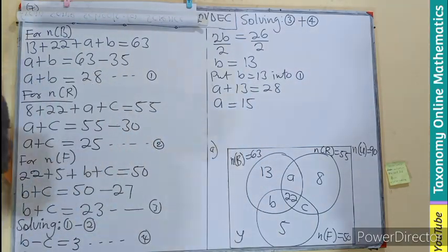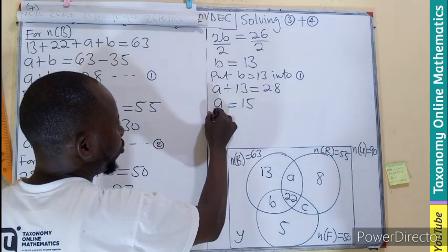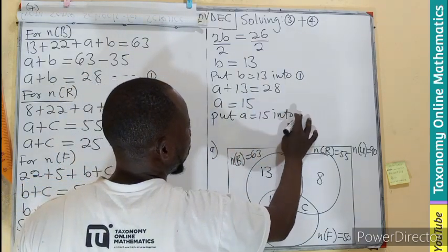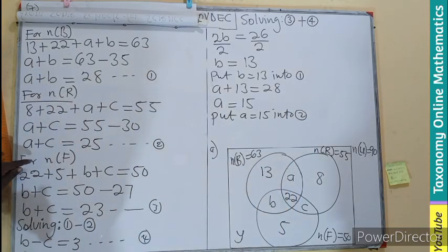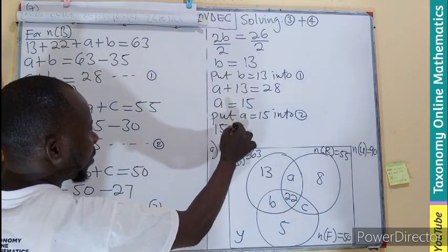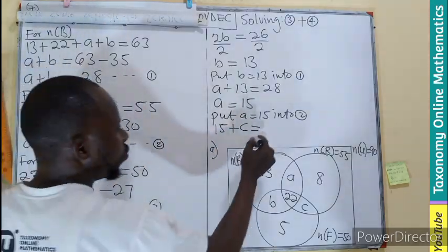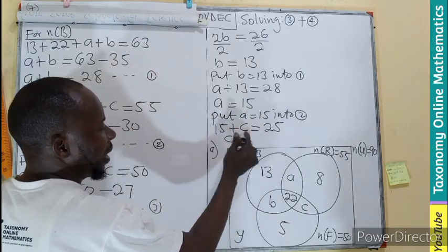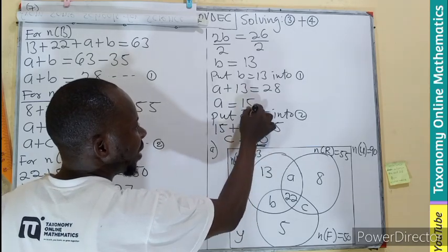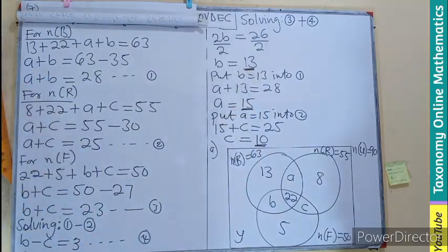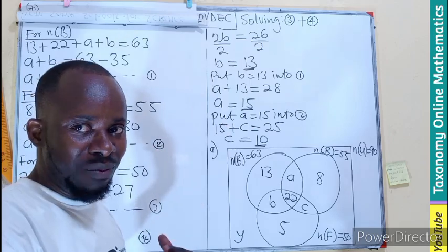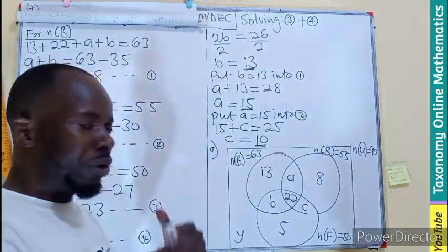You can cross-check: A is 15. Knowing A, put A equals 15 into equation two. Equation two says 15 plus C equals 25, so C equals 25 minus 15, giving us 10. So we now know A equals 15, B equals 13, and C equals 10. This diagram is part of the first one, but since we are solving it, I am going to redraw the diagram replacing the values.